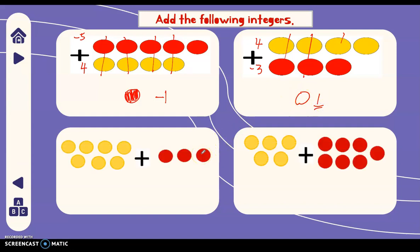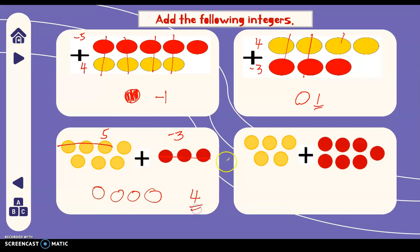Next, we have five positive and three negative chips. We remove all the zero pairs — three pairs here. We count the remaining: one, two, three, four. Therefore our answer is four positive chips or positive four. And this one: five positive and seven negative. We remove the zero pairs — five pairs. The remaining is two negative chips, so negative two is the answer.